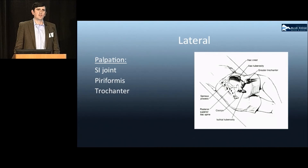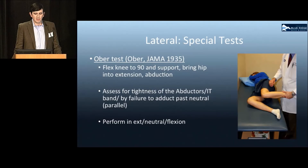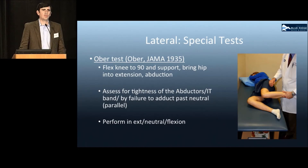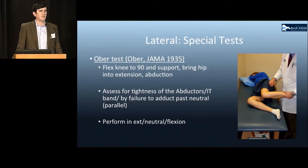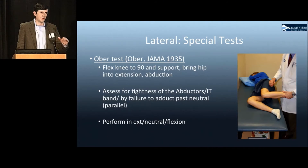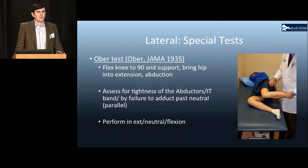In the lateral position, palpation consists of the SI joint, the piriformis, and the greater trochanter. Lateral special testing includes the OBRA test, performed by flexing the knee to 90 degrees, bringing the hip into abduction and extension, and letting it fall. A positive test is if the leg does not fall below parallel. This can also be performed in extension, neutral, or flexion to isolate different parts of the abductor mechanism.